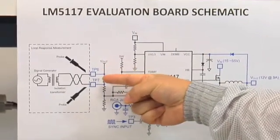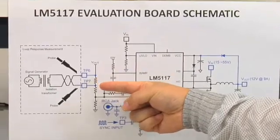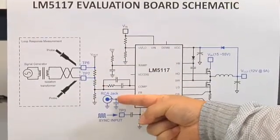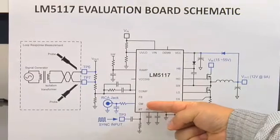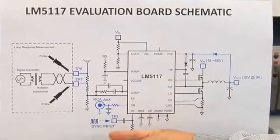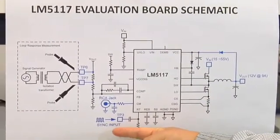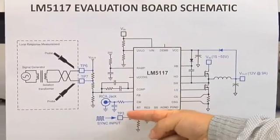TP6, TP7 test points are provided for measuring loop response. RCA jack is connected to current monitor output through an RC filter. External synchronization pulse can be applied to TP3 test point.